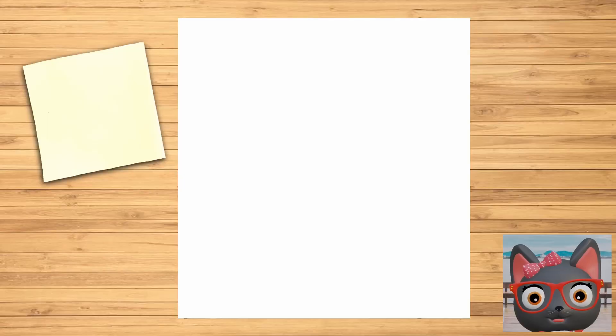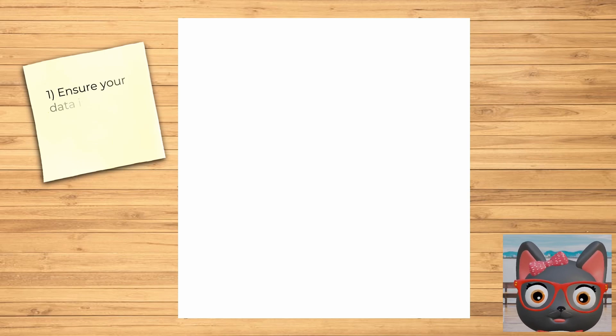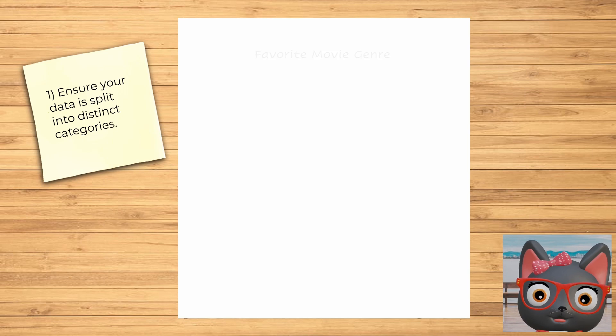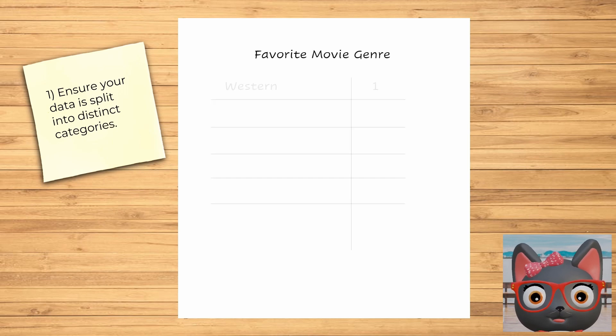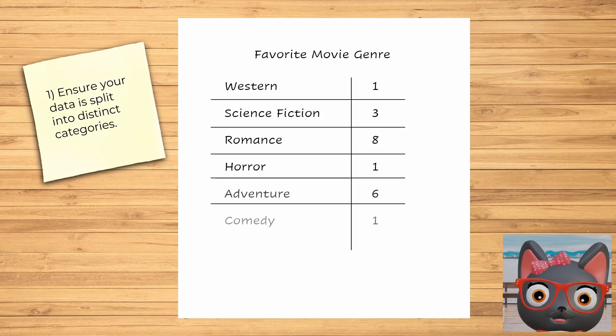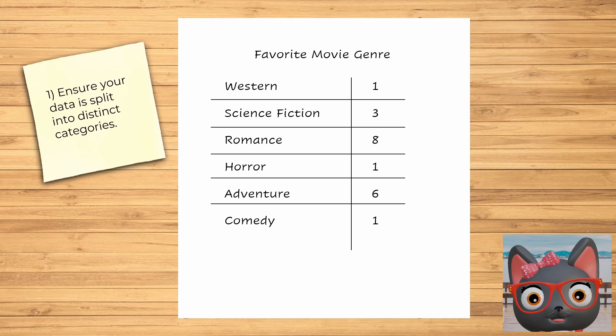If you want to create a pie chart, follow these simple steps. Ensure your data is split into distinct categories with associated quantities. Here, I have surveyed my friends and summarized how many of them like each movie genre.